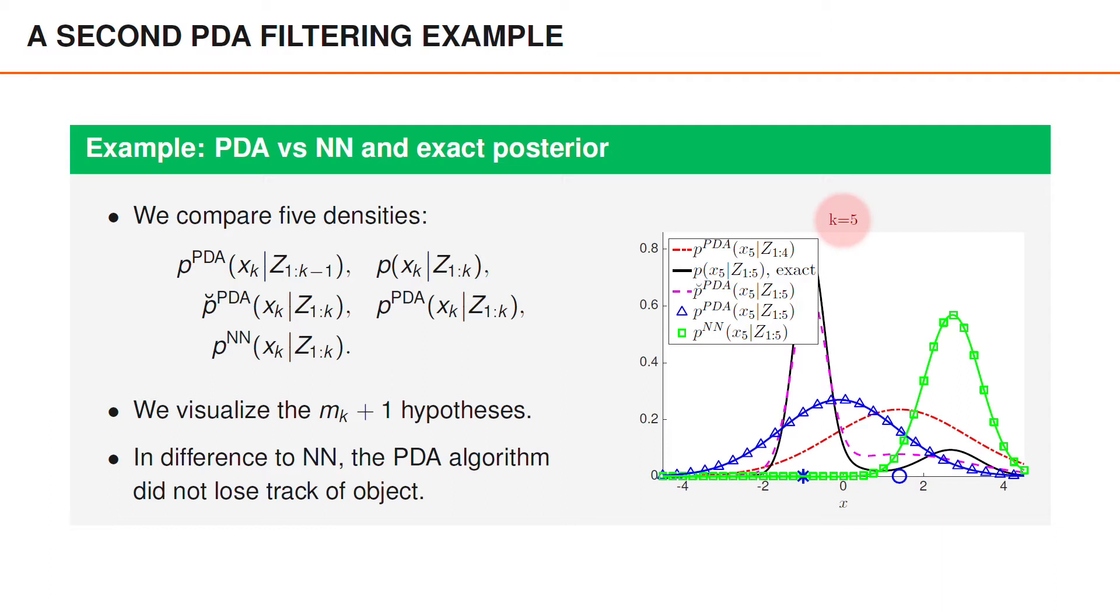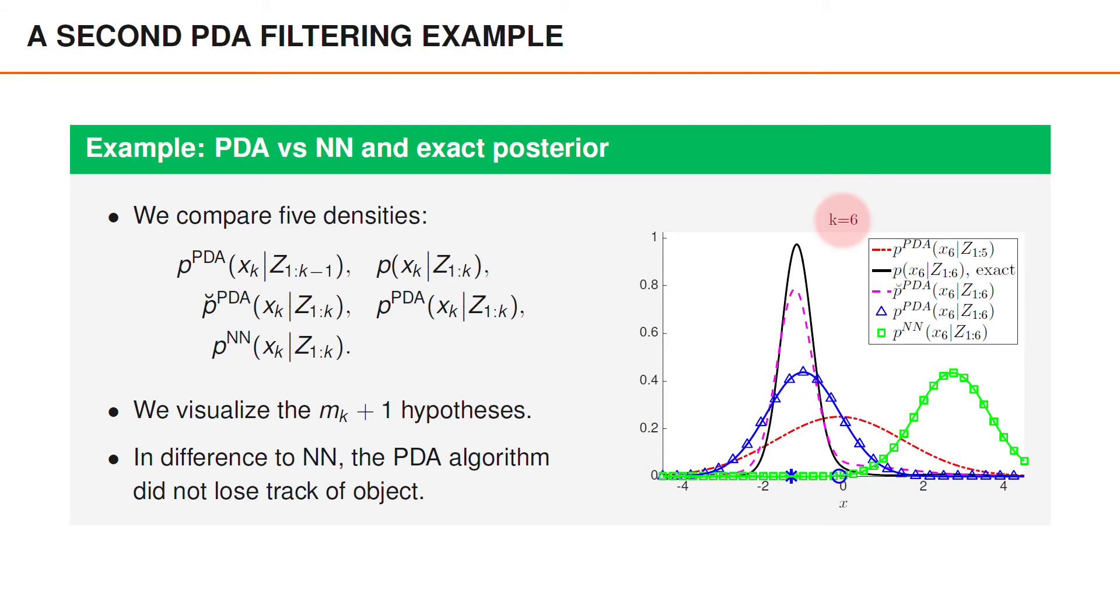As we collect more measurements, the true posterior indicates that the object state is around minus 1. Even though the PDA algorithm overestimates the posterior uncertainties, it makes use of the new measurements to shift the posterior in the right direction. At time 6, the PDA filter approximates the posterior density relatively well, whereas the nearest neighbor algorithm has disregarded the last two measurements as clutter and still believes that the object state is around 3.